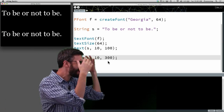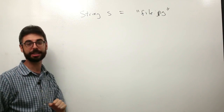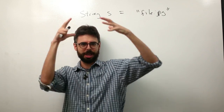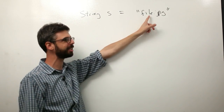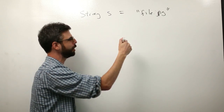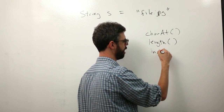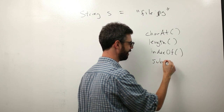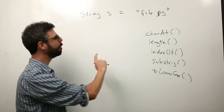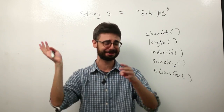This string data type — capital S — means it's an object. An int is a primitive data type, a float is just a number, a PImage is an object with pixels, width, and height. A String also has a lot of stuff: a sequence of characters, but also lots of functions we can call upon this object — charAt, length, indexOf, substring, toLowerCase — there are lots and lots of methods we can call to manipulate and work with strings. We're going to see all of these in this set of videos.